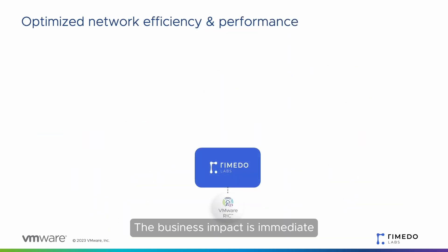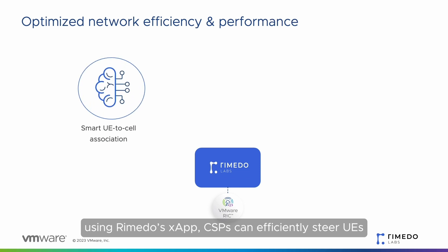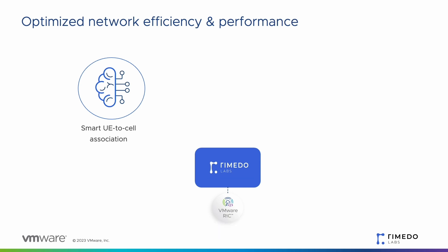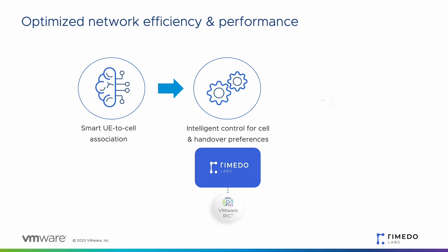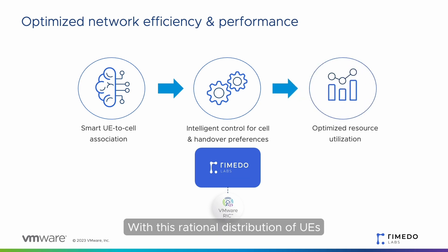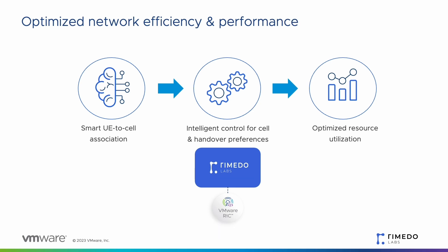The business impact is immediate. Using Remedo's X-App, CSPs can efficiently steer UEs to base stations following currently valid policies. This AI-driven steering avoids network congestion through intelligent load balancing. With this rational distribution of UEs among serving base stations and congestion avoidance, the X-App guarantees efficient resource utilization.